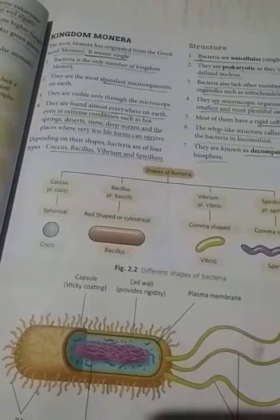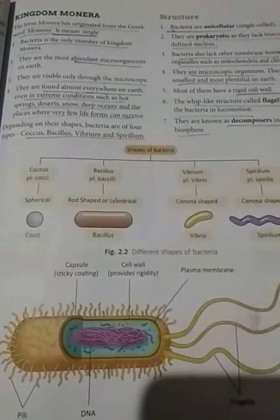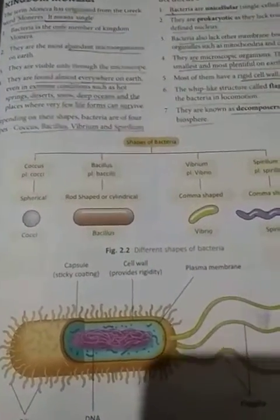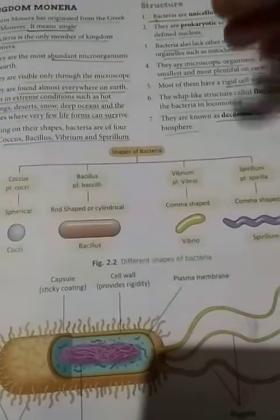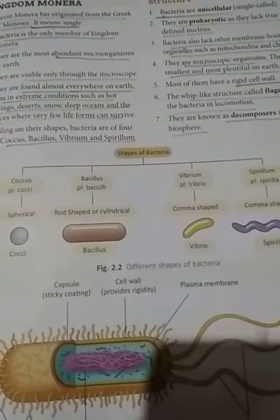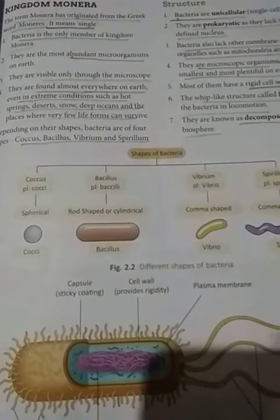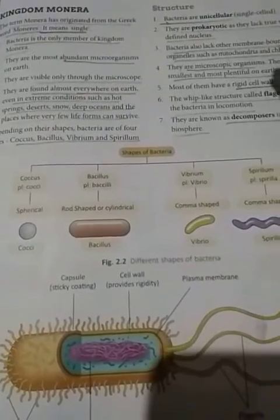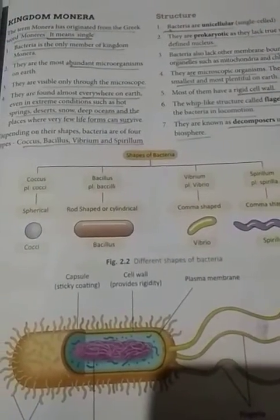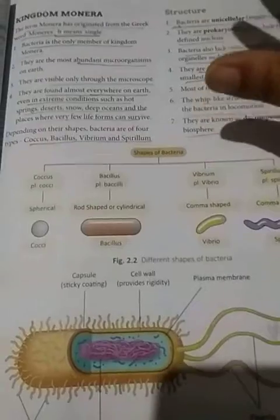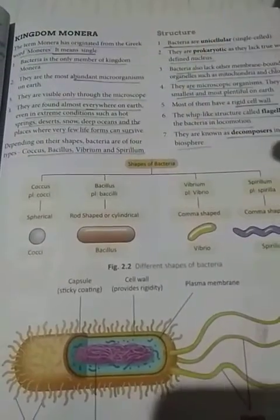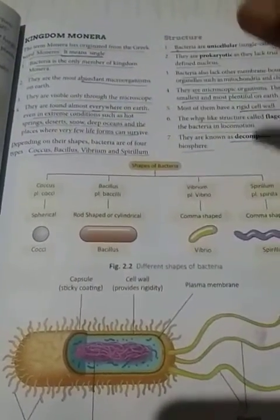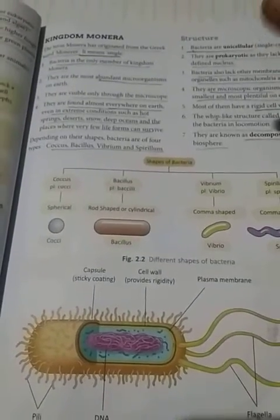Now, Kingdom Monera. As you know, there is a five-kingdom classification and every kingdom has its own features. The word 'Monera' has been derived from a Greek word meaning 'single' or 'only one.' The only members found in Kingdom Monera are the bacteria. Bacteria are present everywhere, but we cannot see them - they can only be seen through a microscope.